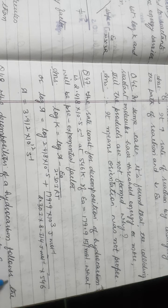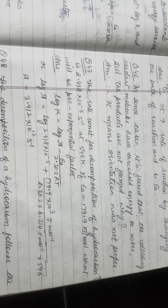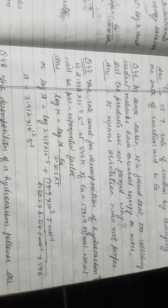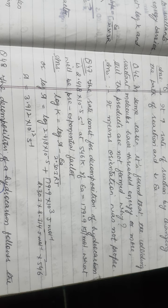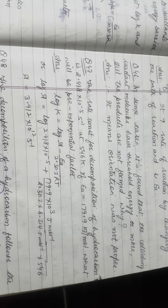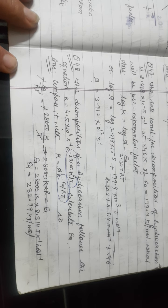The decomposition of a hydrocarbon follows the equation K = A × e^(−Eₐ/RT). This is the Arrhenius equation: K = A × e^(−Eₐ/2.303RT). You are asked to find Eₐ. The exponential factor equals e^(−Eₐ/RT), so set the given exponent equal to −Eₐ/RT and calculate Eₐ.